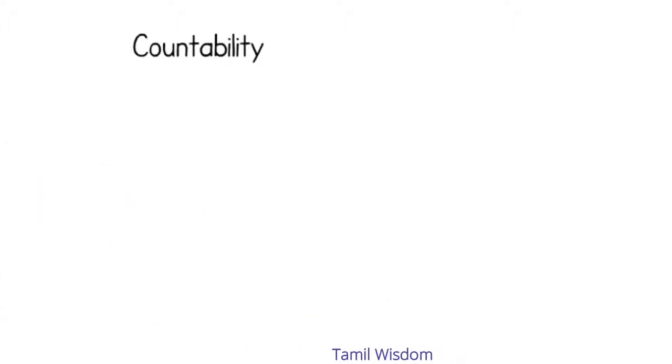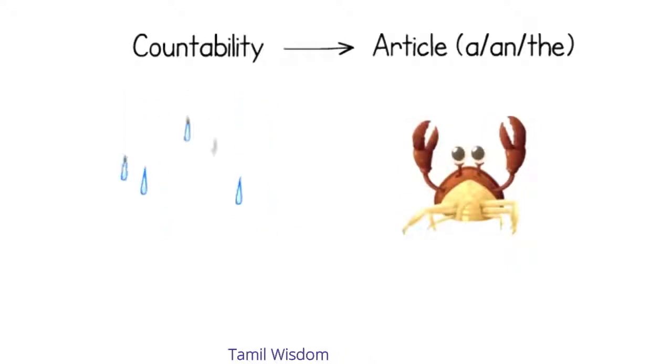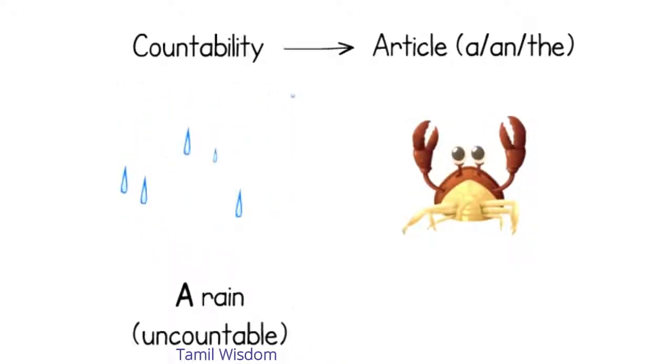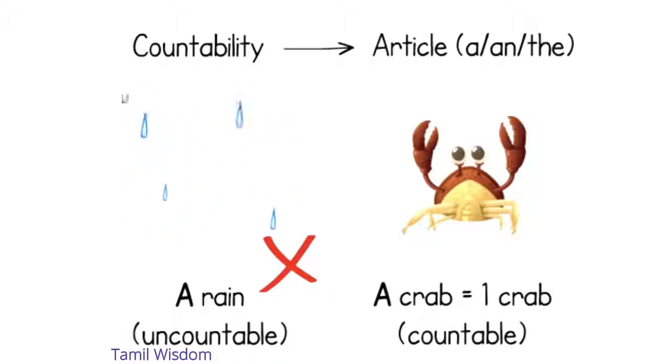Countability is also important for determining which article a, an, or the can be used with a noun. For example, you generally would not use the articles a or an with an uncountable noun. Review the section on articles for more information about article usage and countability.